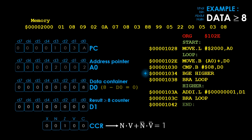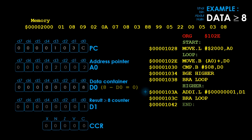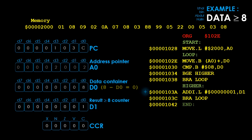The program has now branched to label higher. Before executing the add instruction, the program counter's value is updated to point to the next instruction at address 103C. Then the add instruction is executed: D1 is incremented to 1, indicating that the data compared has a value that is greater than or equal to 8. The status register is updated to 00000 because the addition resulted in a positive non-zero number.